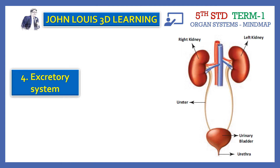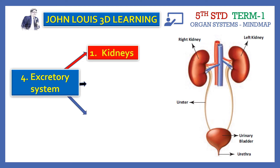All the nutrients and water are taken in by our body. So what are the waste products and how are they removed from our body? That is the excretory system. The main organ is the kidney, and there are two kidneys — the right kidney and the left kidney.